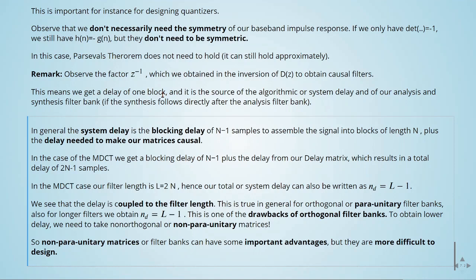In the case of the MDCT, we get a block delay of n minus 1, plus the delay from our delay matrix, which results in a total delay of 2 times N minus 1 samples. In the MDCT case, our filter length is l equals to 2 times n, hence our total, or our system delay, can also be written as nE equals to l minus 1. We see that the delay is coupled to the filter length.